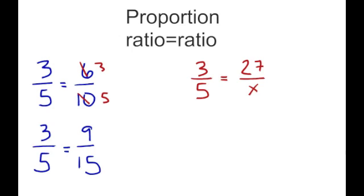The other way you could verify proportionality is by scale factor. You know that 3 times 3 is equal to 9, and if 5 times 3 is equal to 15, then you're saying that they're proportional as well because the ratios are equivalent.